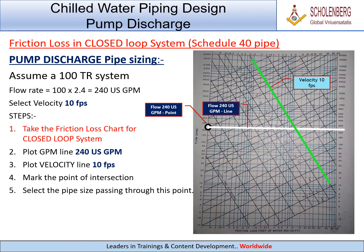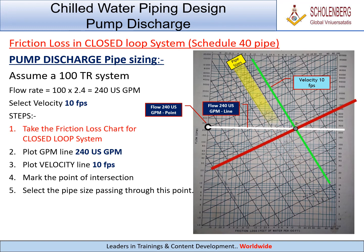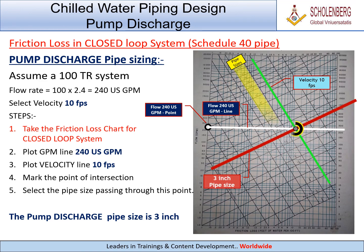4. Mark the point of intersection. 5. Select the pipe size passing through this point. The pump discharge pipe size is 3 inch.